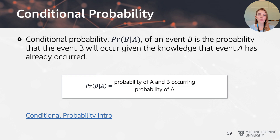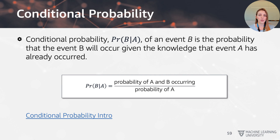We need to take it one step further and talk about conditional probability. The conditional probability of B given A is the probability that event B will occur given the knowledge that event A has already occurred. We calculate it as the probability of A and B occurring at the same time divided by the probability of A occurring. We're going to condition on group memberships — on whether a sensitive attribute belongs to a group, yes or no.